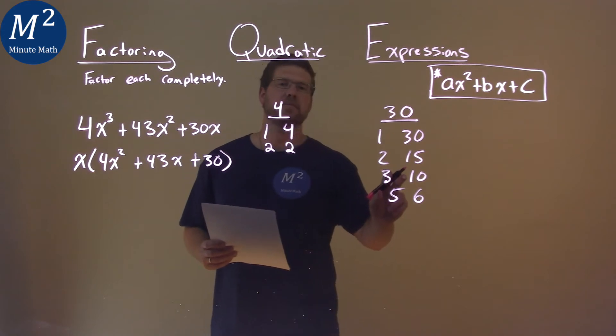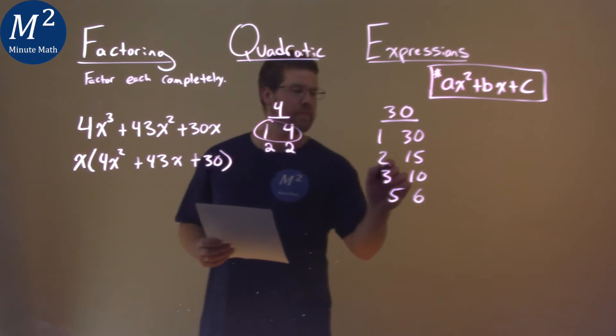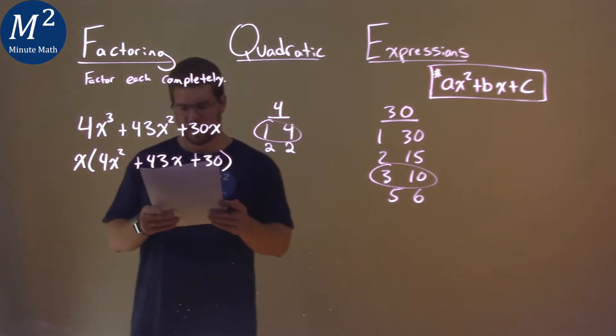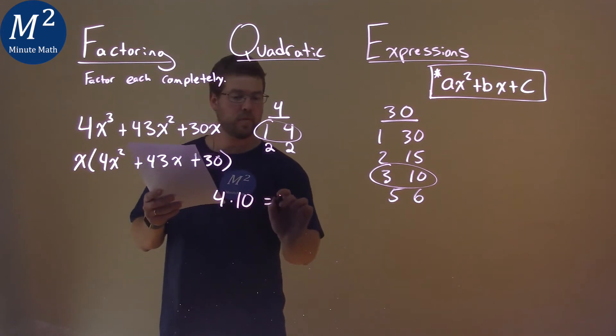Well, 4 times 10 is going to be 40. That's pretty close. So let's go deal with these pairs here. This one and this one. So, 4 times 10, and that's equal to 40.